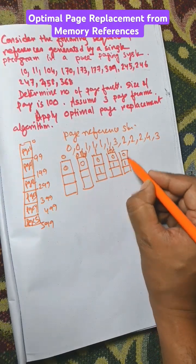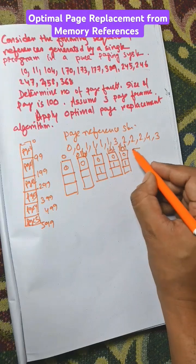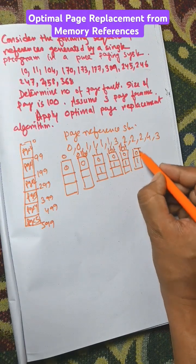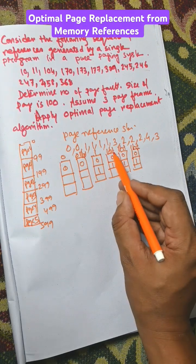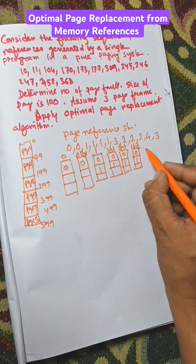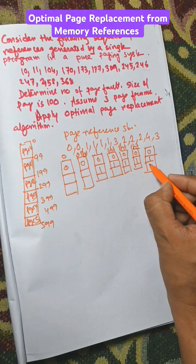Next is again 0, that is a hit. Next is again 1, that is also a hit. One is available here, so hits on 1. Now 3, three is placed in the third position.